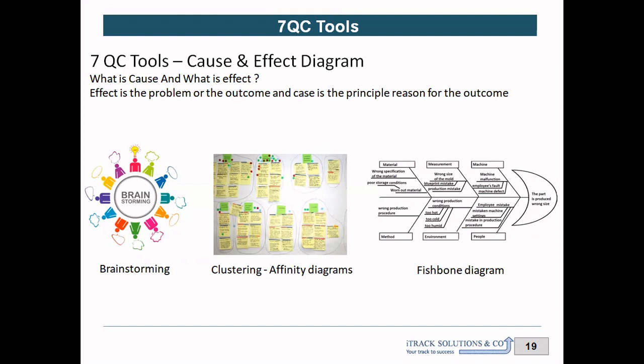The technique used to cluster causes is called an affinity diagram. You may have 30, 40, or 50 causes for a particular problem, but you can club those under five or six common headers. As Kaoru Ishikawa suggested, you can club them under the six M's: Man, Mother Nature, Material, Measurement, Method, and Machine. These are the six common headers, though it is not a hard and fast rule. The sequence is: brainstorming, then affinity clustering, then the fishbone diagram.